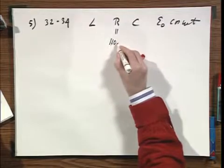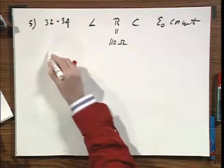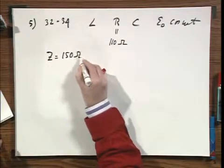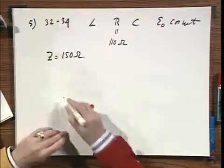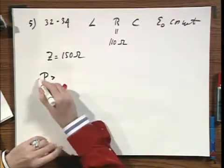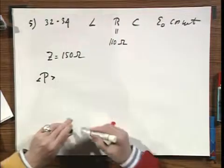This is 110 ohms. And you're being told that the impedance is 150 ohms. And you're being asked what is the mean power that is delivered to the circuit.